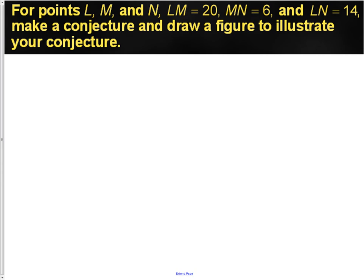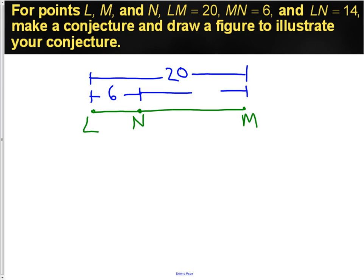What your picture should have looked like, actually, is a line segment. L on one end, M on the other end, and N in the middle. If you think back to last chapter, we learned something about betweenness. So N is between L and M. So our distance from L to M is 20. Our distance from L to N is 6, and from N to M is 14. This would be a much more accurate picture than the last one.